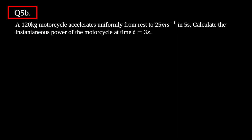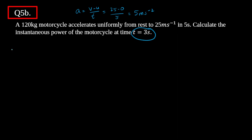Moving on to the next question: a motorcycle accelerates uniformly from rest to 25 meters per second in 5 seconds. Since it accelerates uniformly, I can use a = (v − u)/t = (25 − 0)/5 = 5 m/s². The question asks to calculate the instantaneous power of the motorcycle at time t = 3 seconds.